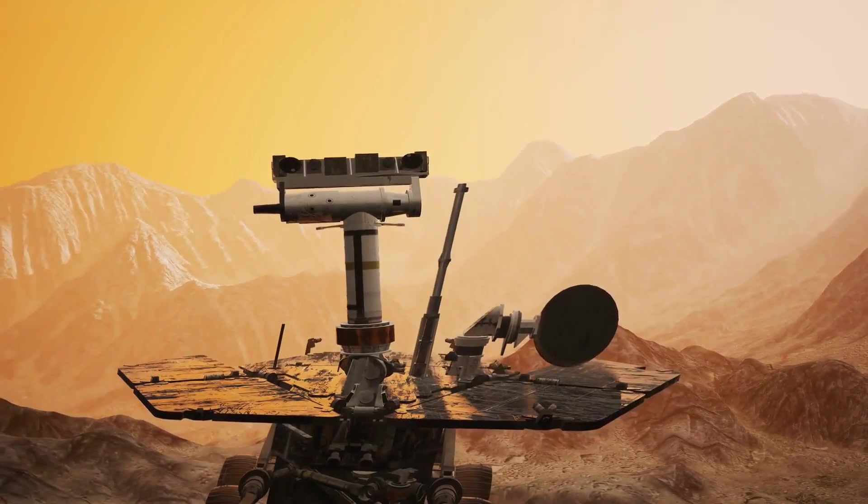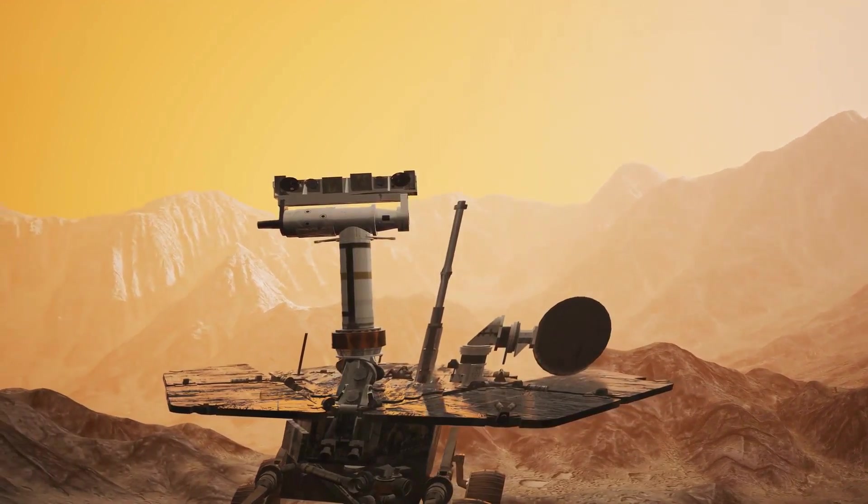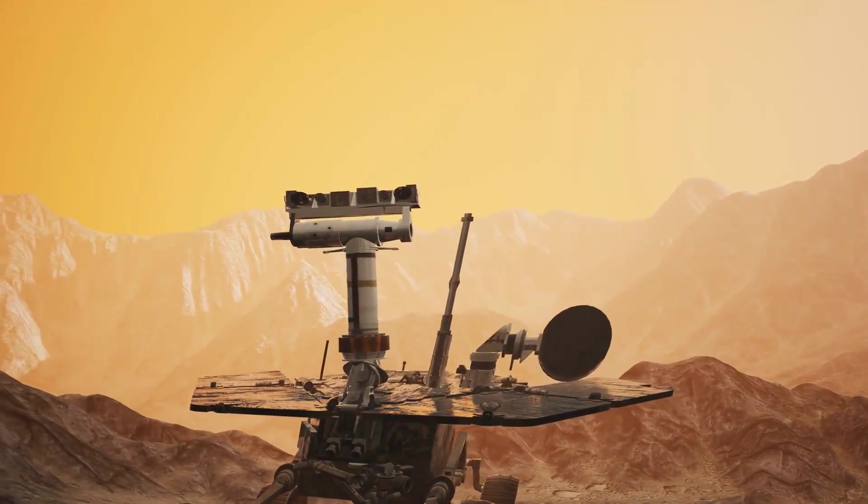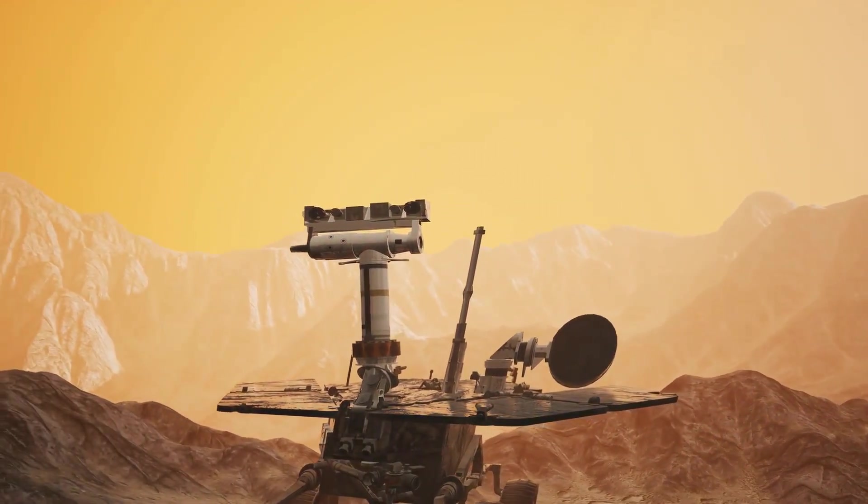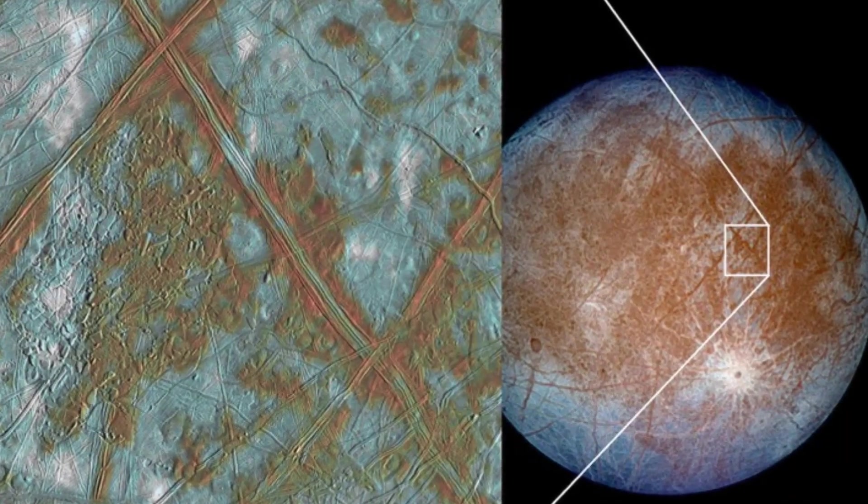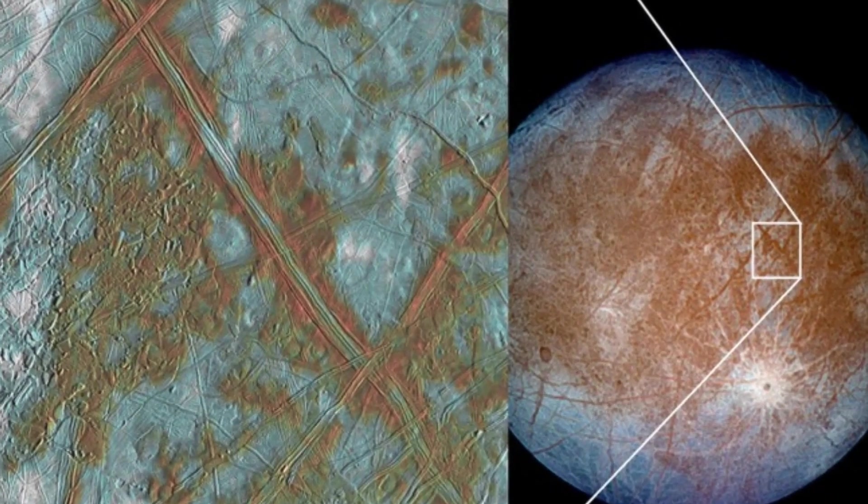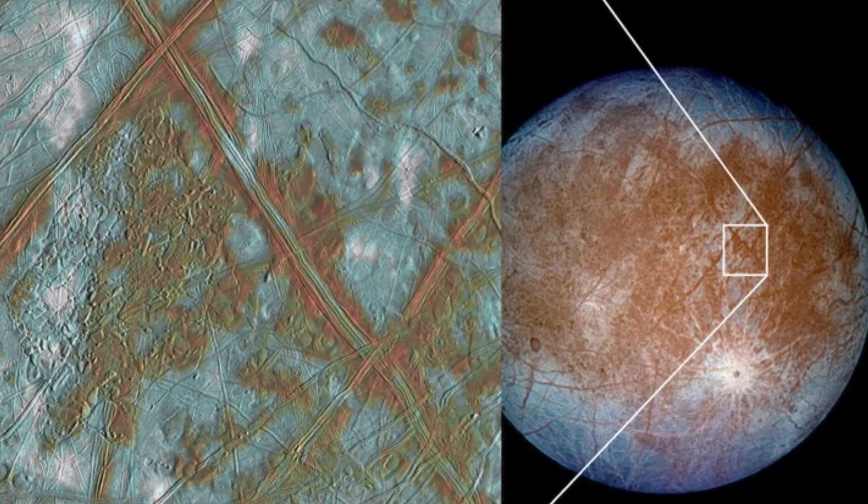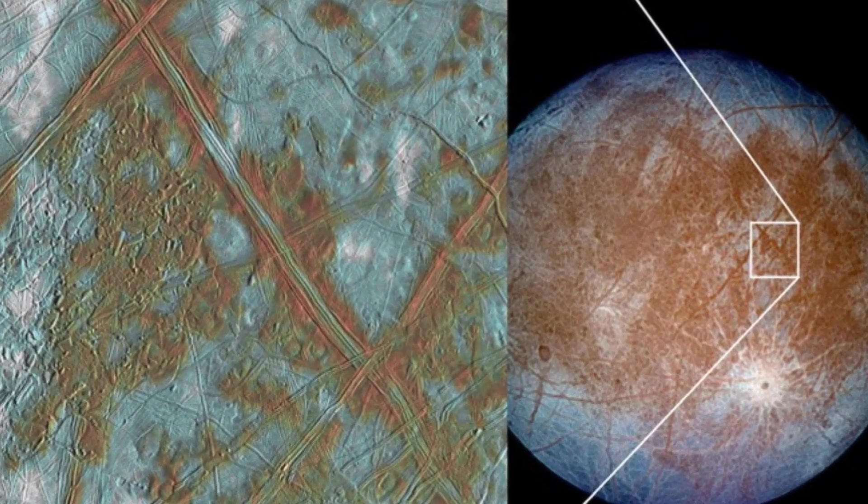Mars, for instance, would be harder to colonize than its moon Phobos because we would be fighting against its gravity, whereas Phobos has near zero gravity. Similarly, settling a way station underneath Europa's icy crust could be an easier alternative to settling on radioactive Jupiter.